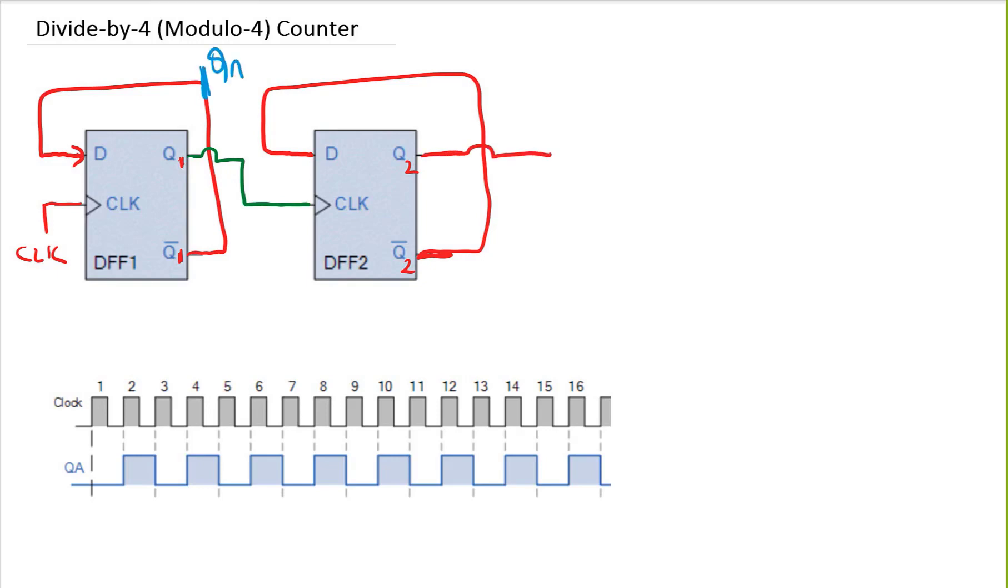This will be my Q2. Let's call this one QA and this one QB. So QA and QB are my counter outputs. This QB is the most significant bit of my counter and QA is my least significant bit. Let's try to look at the waveform. This is my QA.